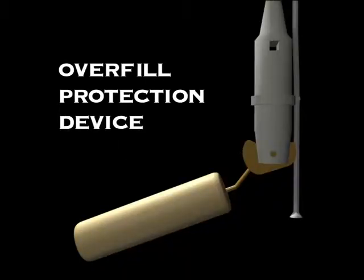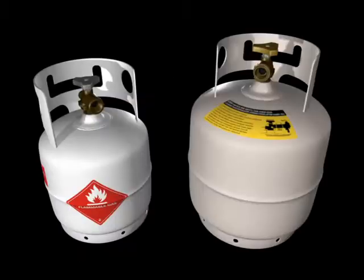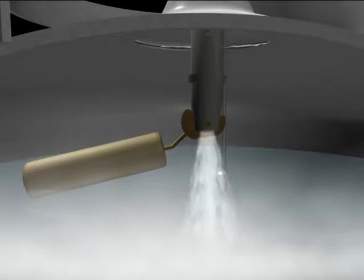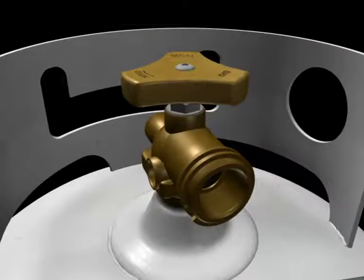Since 2003, all 4.5 and 9 kg cylinders have an overfill protection device fitted to the cylinder valve. You'll recognize these valves by their triangular hand wheels.